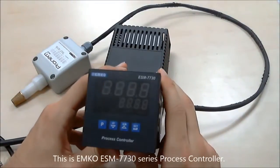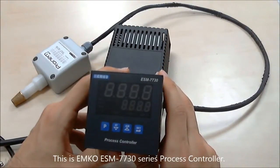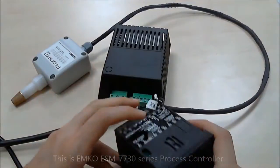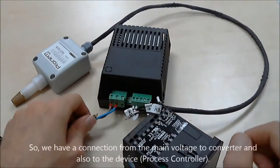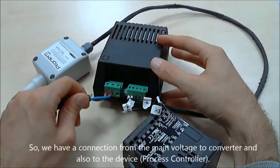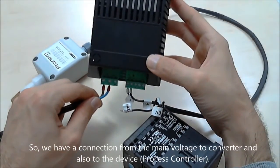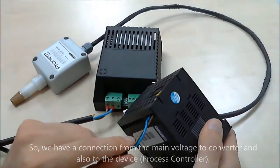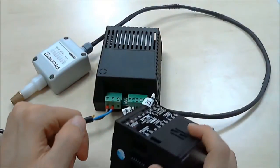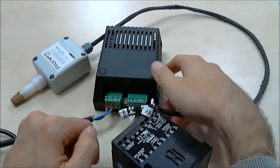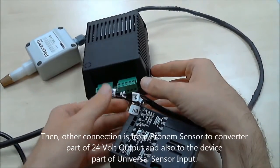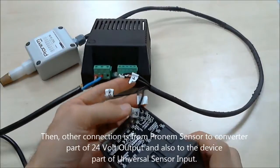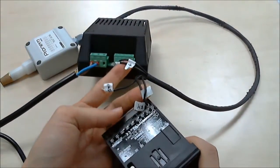And this is the EMCO ECM7730 series process controller. So we have a connection from the main voltage to converter and also to the device. From the converter output at 24 Volt to our device's input, as you see.